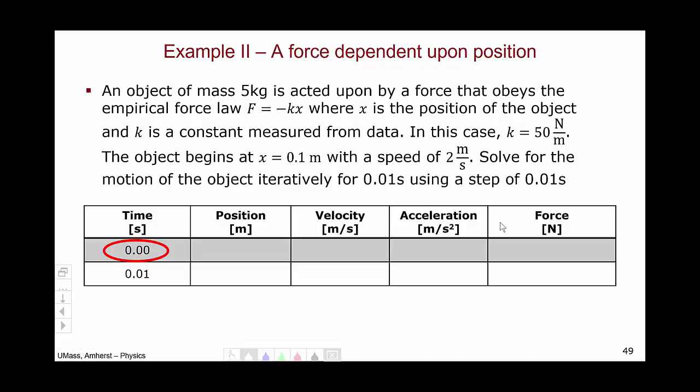Let's begin with t equals 0. What do we know? Well, we know that the object is initially at 0.1 meters, so we can substitute in that value. And we know its initial speed is 2 meters per second, so we can substitute in that value.